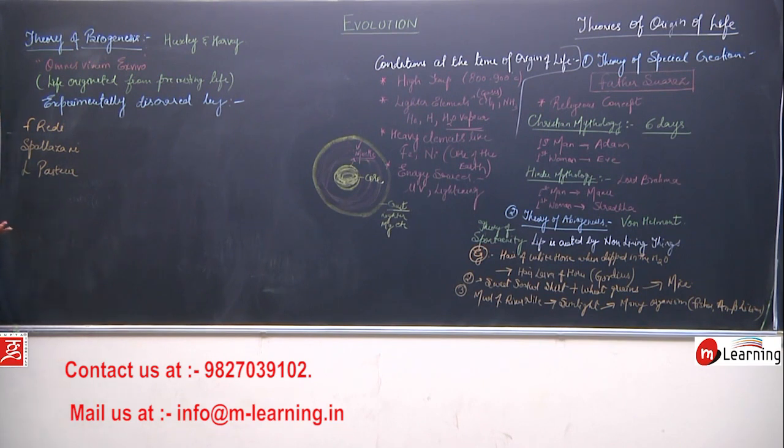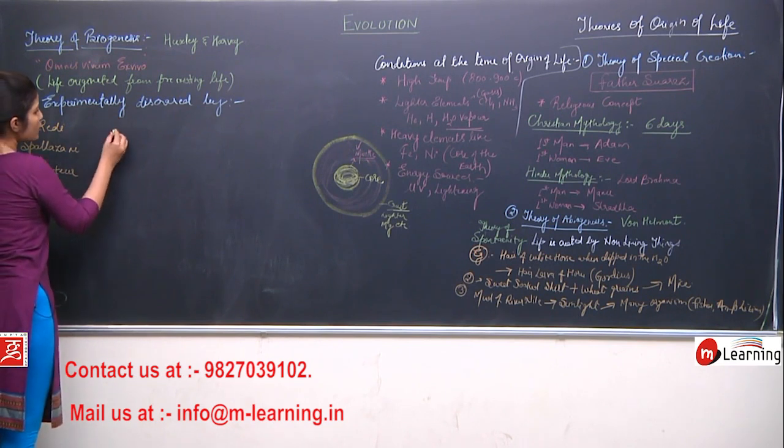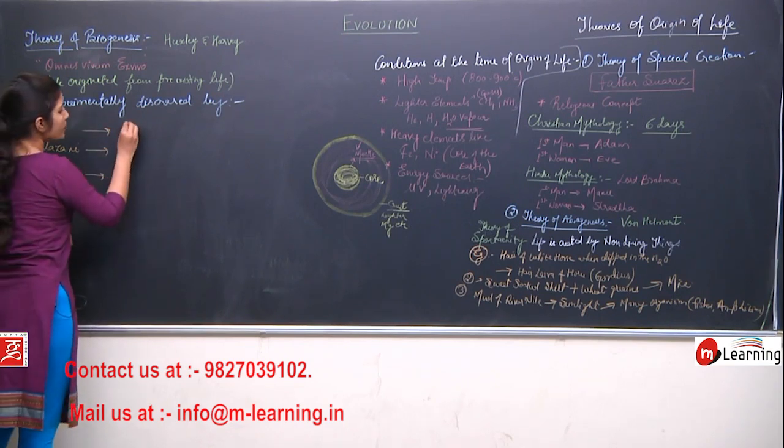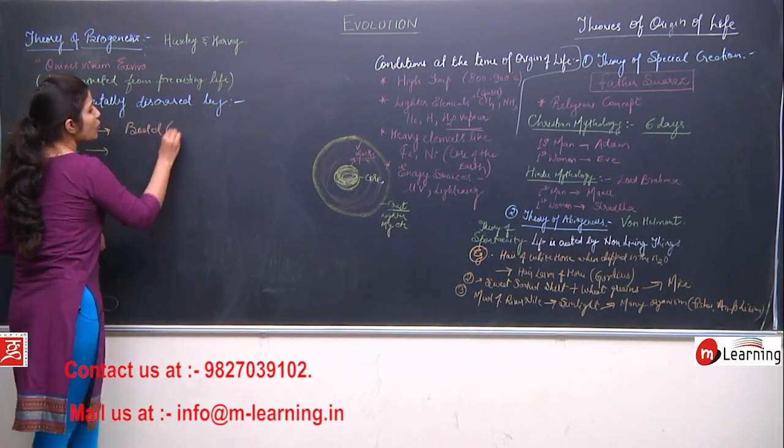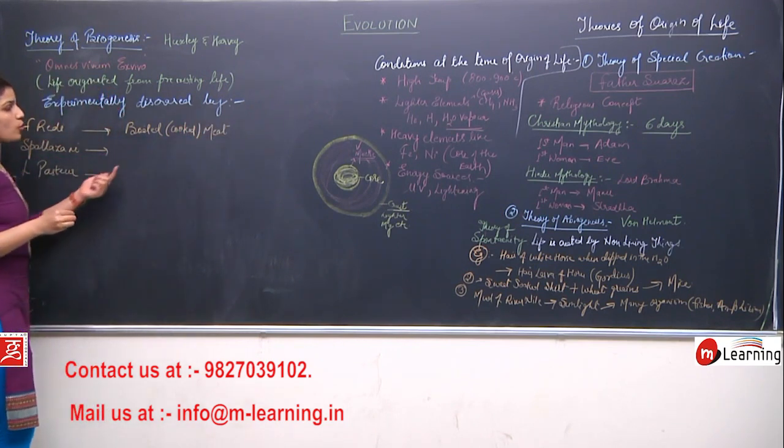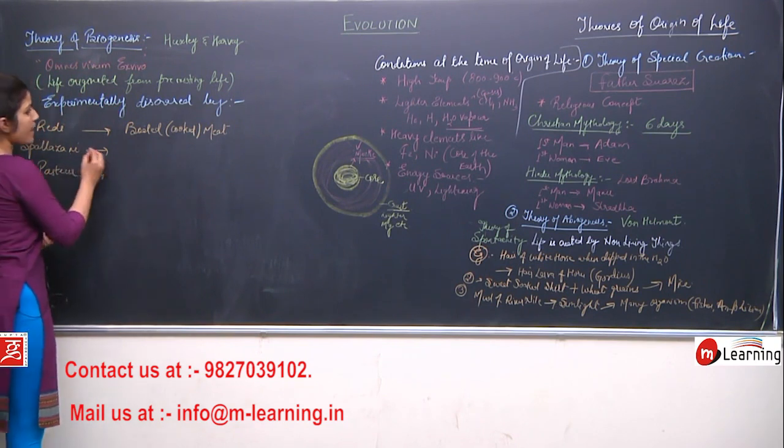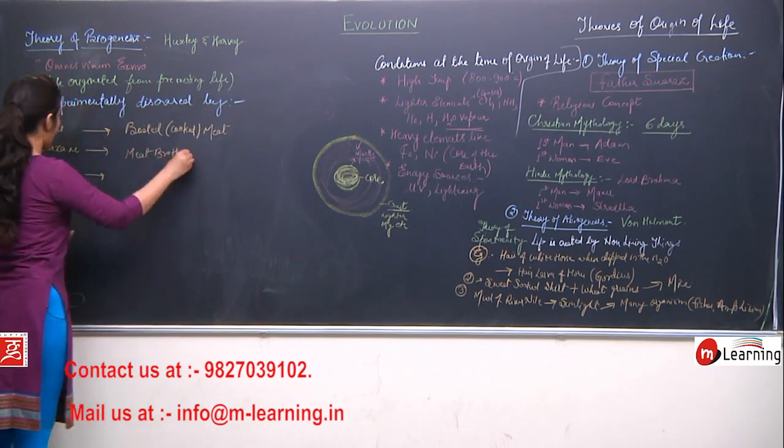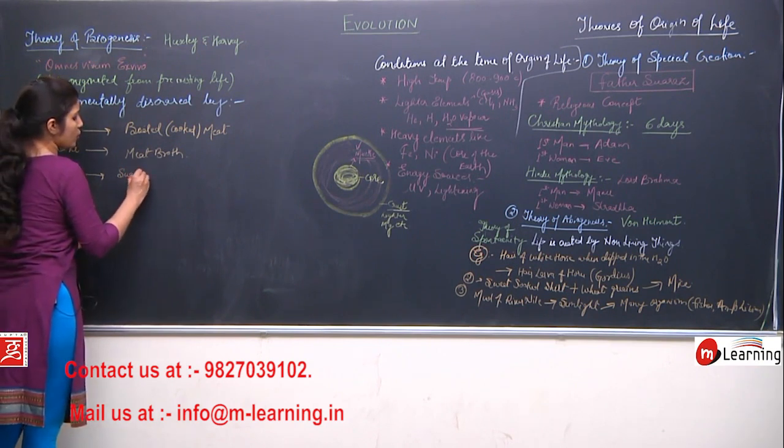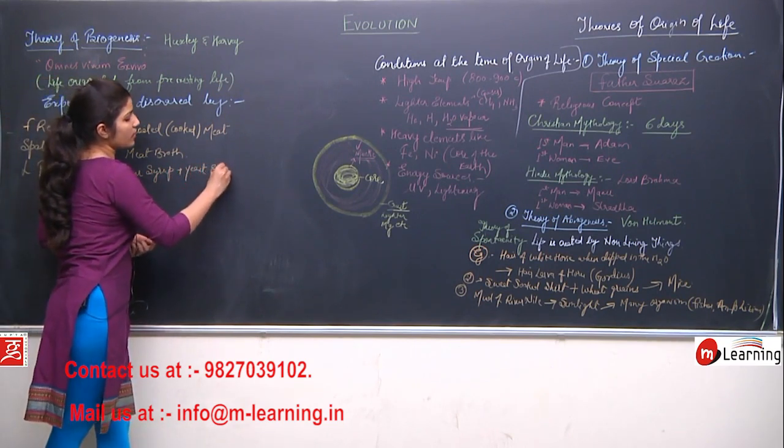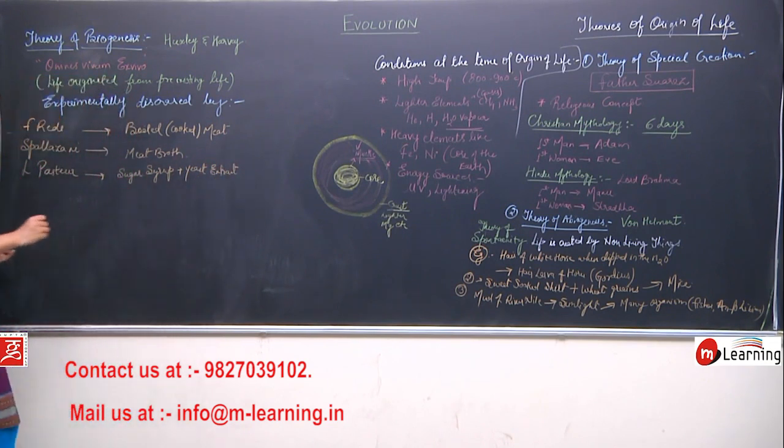What they did was they performed an experiment using nutrient broth. Francisco Redi used boiled or cooked meat, Spallanzani also used meat broth, and Louis Pasteur used sugar syrup and yeast extract. What was the experiment performed by Francisco Redi?